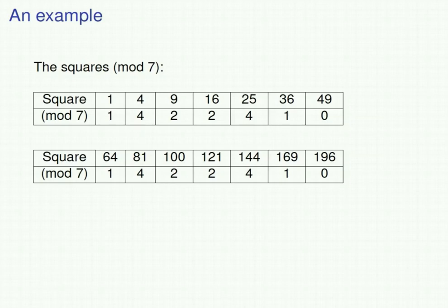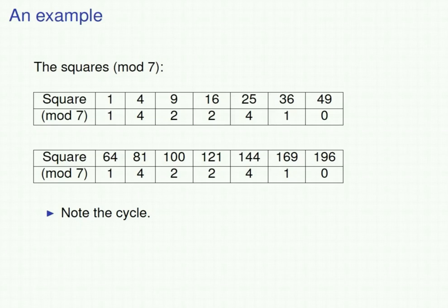We can continue and compute the remainders of 64, 81, 100, and so on when divided by 7, giving the numbers in the second table. You might notice that the remainders cycle: they go 1, 4, 2, 2, 4, 1, 0, 1, 4, 2, 2, 4, 1, 0, and so on.